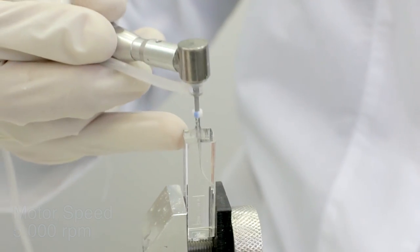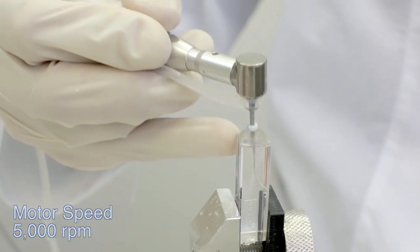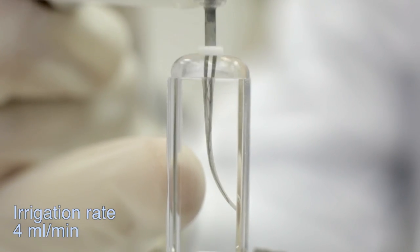Treat each canal using light pecking motions for 4 minutes with a recommended irrigant flow rate of 4 milliliter per minute.